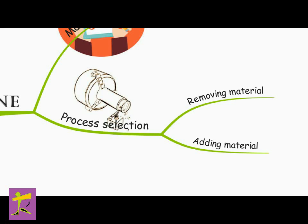Add material: The second view is to consider part evolution from a finished state back to a rough initial state. In this view, in contrast to the first view, the operation processing is planned by adding material back onto the part.